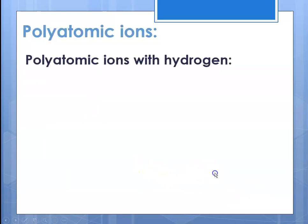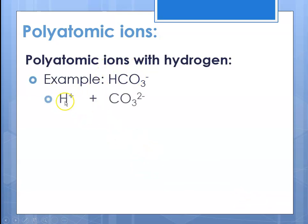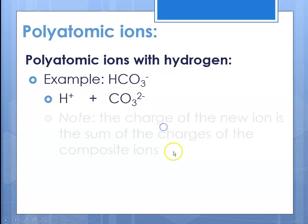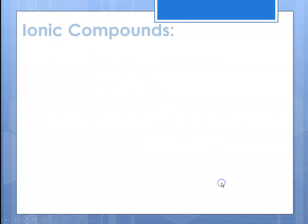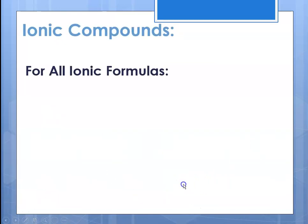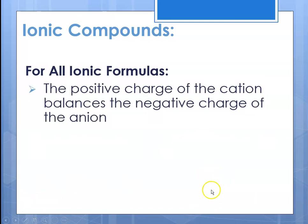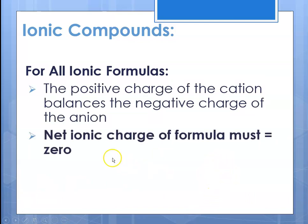Polyatomic ions can include hydrogen — for example, hydrogen carbonate, which is the H⁺ ion combined with a carbonate ion. The net charge of the new ion is the sum of the two: plus one minus two gives a net charge of minus one. For all ionic formulas, the positive charge of the cation must balance the negative charge of the anion, so the net ionic charge is always zero. That's all we're going to talk about with ionic compounds for the moment. This is Ms. Augustine, signing off.